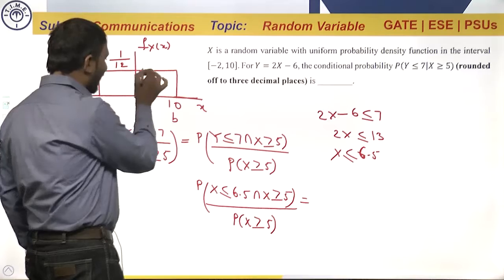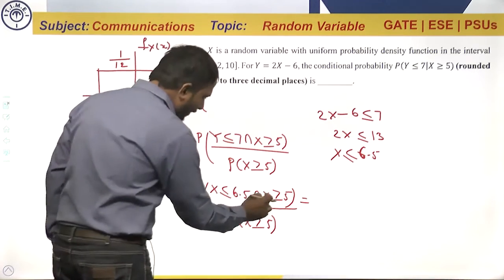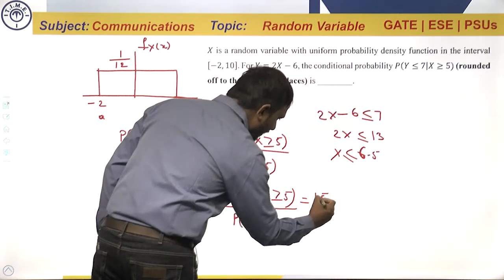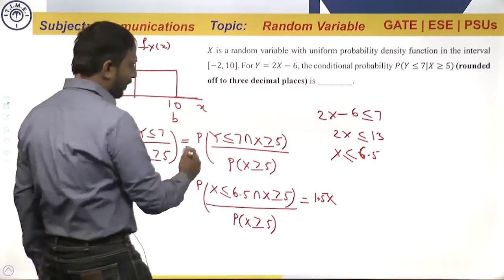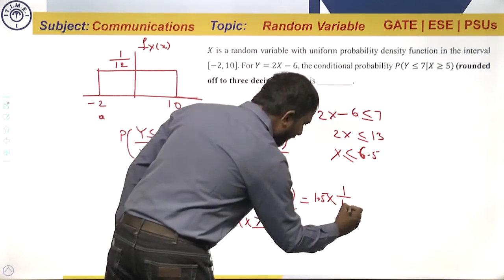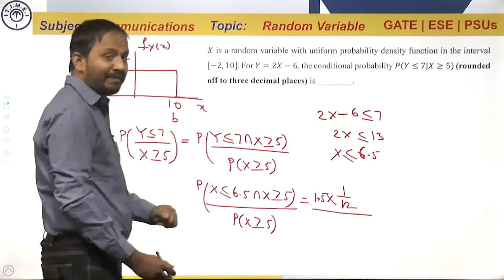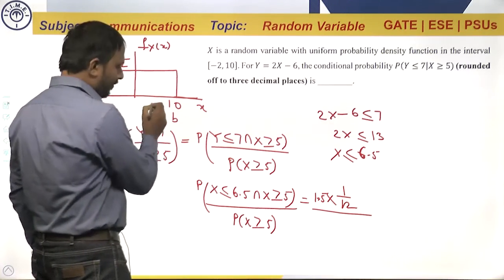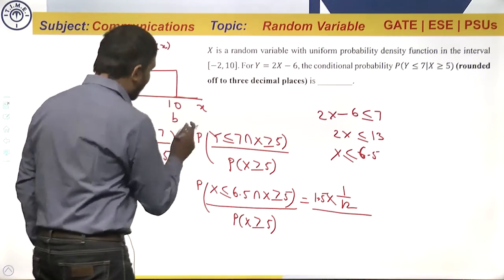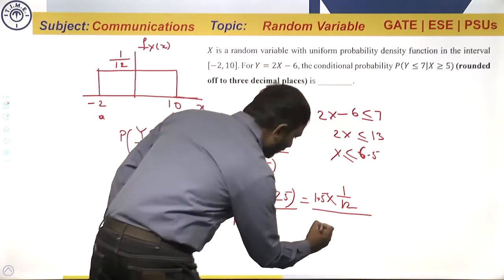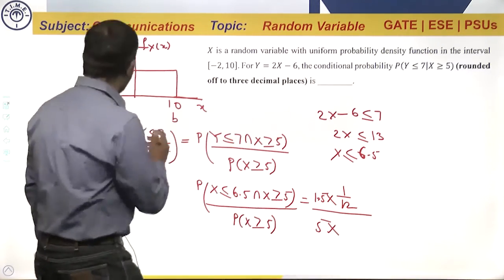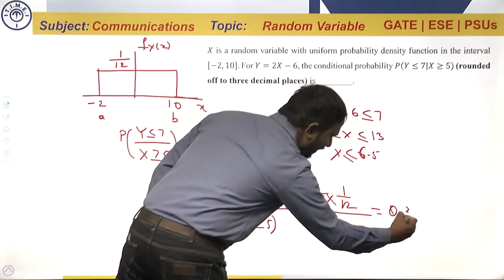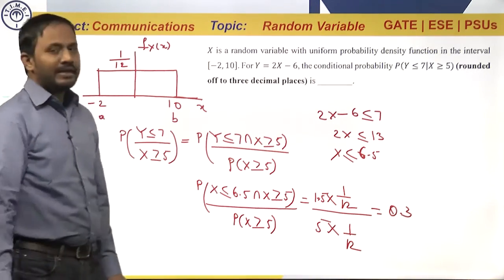This is a rectangular area, so length into breadth. From 5 to 6.5 the distance is 1.5 and its value is 1 by 12. The denominator — x greater than or equal to 5 means from 5 to 10, so distance 5 multiplied by 1 by 12. This simplifies to 0.3, which is the answer.